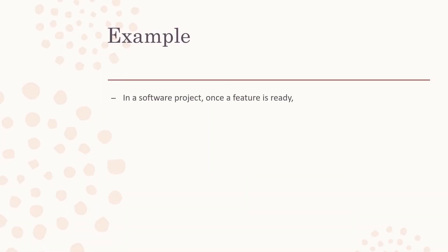From an example perspective, let's talk about a software project. You're working on a software project that has several features. When a feature is ready, as a project manager you ask the development team to take that feature to the testing team and perform testing. The quality or testing team performing that testing is basically verification — they are checking whether the code has quality and follows organizational standards and regulations.